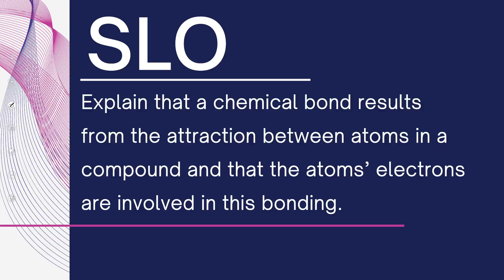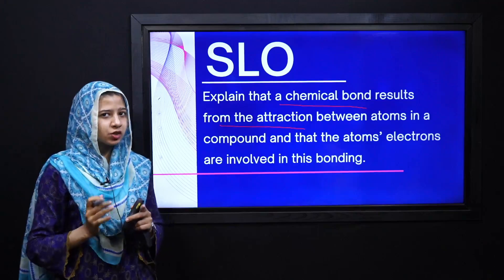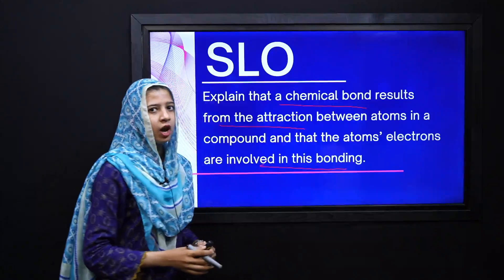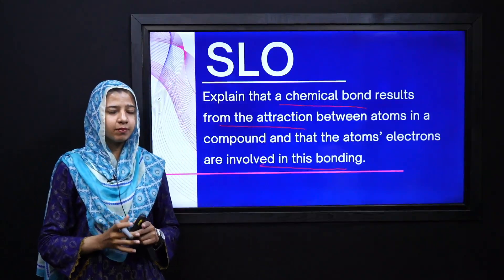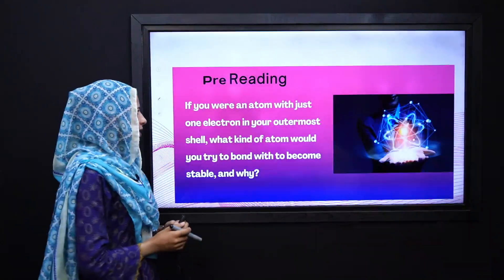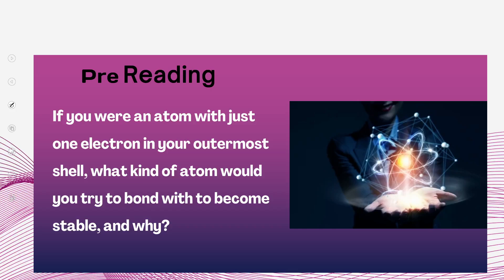Chemical bonds are formed as a result of attraction between atoms, and the electrons of atoms are involved in this type of bonding. But before starting our lesson we will brainstorm a few ideas. Imagine that if you were an atom with just one electron in your outermost shell, then what kind of atom would you try to bond with to become stable?